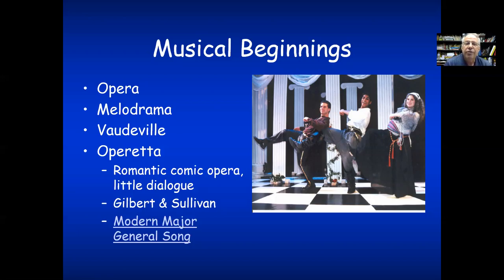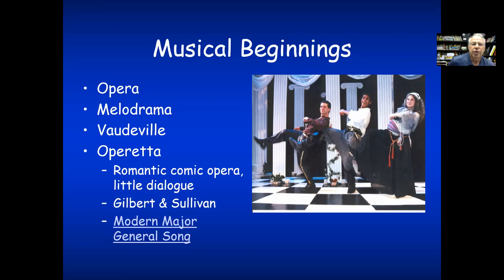Opera was big in the Renaissance, and that was a distinct form from regular theater, so we don't really cover it in this class. Melodrama we looked at. Vaudeville's part of the 1800s. Operetta is kind of a little opera — a variation of opera with lighthearted themes and some speaking, and it's not serious and heavy like the big European operas of the Renaissance.